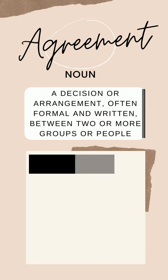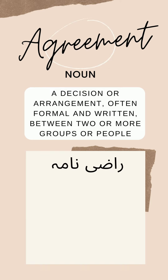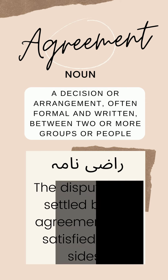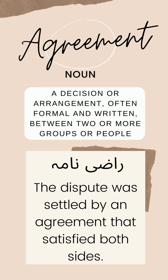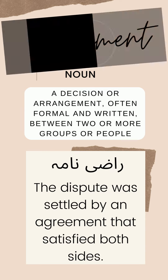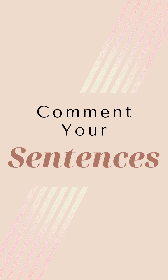So razi nama — that's also called agreement. Both meanings are around the concept of raza mandi, where two parties say 'yes, we accept it.' Here is the sentence: The dispute was settled by an agreement that satisfied both sides. A fight was resolved — solved — through an agreement, a razi nama, that satisfied both parties and made both sides happy. All right, and that's it — now it's your turn to make your own sentences and comment below.